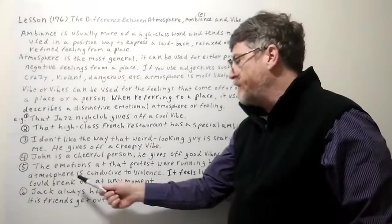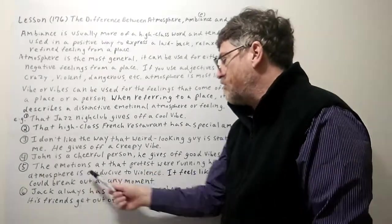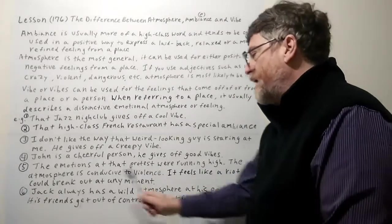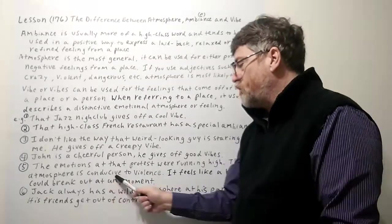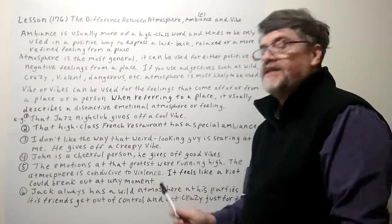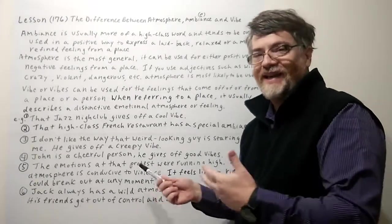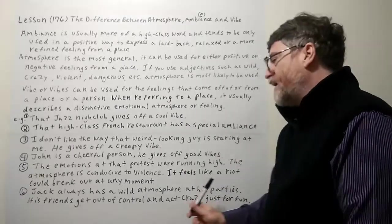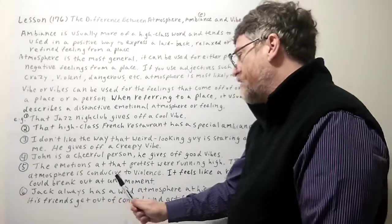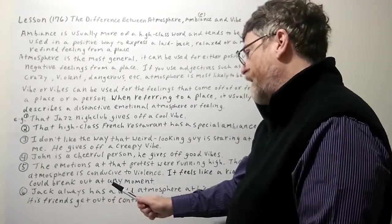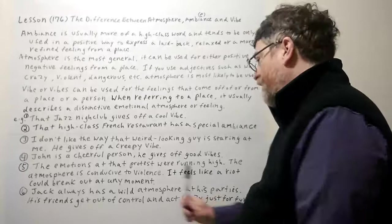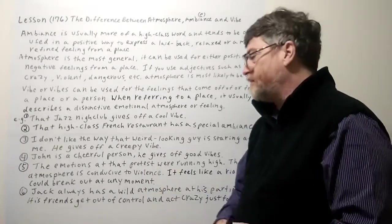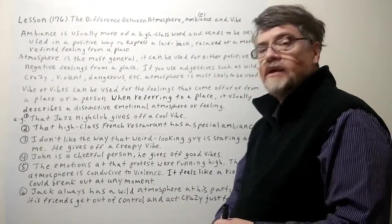The fifth example: 'The emotions at that protest were running high. The atmosphere is conducive to violence. It feels like a riot could break out at any moment.' You would definitely not use ambiance in this way. This is clearly atmosphere — describing a tense, potentially violent situation.